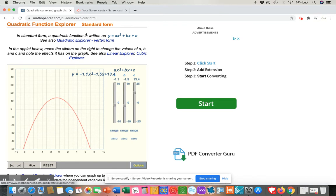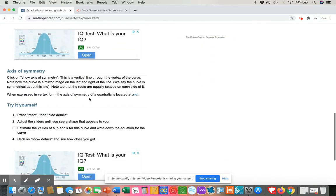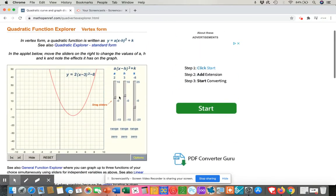So you can move around the sliders and see what it does. So right now we're looking at standard form, but we can also look at vertex form. And again, it's going to have information about the roots, the axis of symmetry, and you have, once again, the sliders that allow you to see what's happening with the graph.